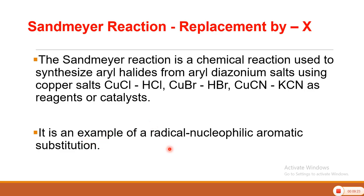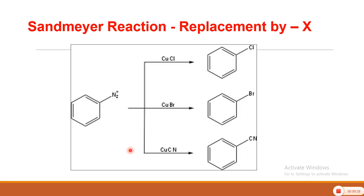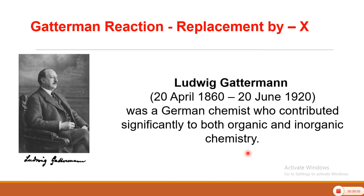The Sandmeyer reaction is an example of radical nucleophilic aromatic substitution. In the reaction, the N₂Cl group is eliminated and replaced by Cl using CuCl/HCl, by Br using CuBr/HBr, or by cyanide using CuCN/KCN. In all these reactions the N₂Cl group is replaced by the corresponding group — chlorine, bromine, and cyanide. Iodine replacement was seen in the earlier reaction using potassium iodide. These are the replacement reactions of diazonium compounds.